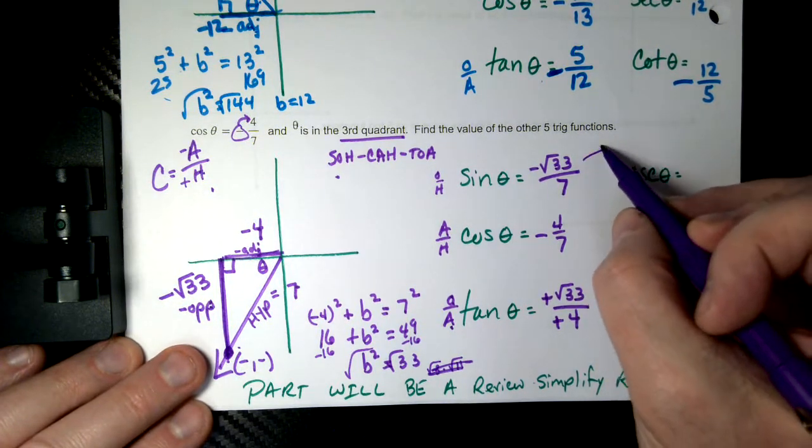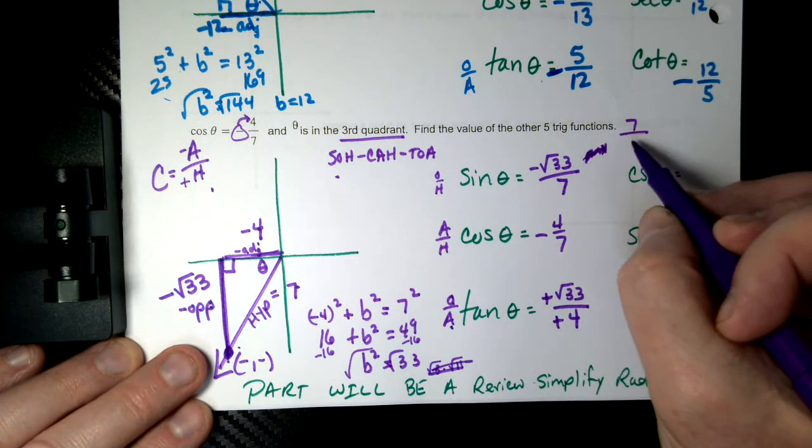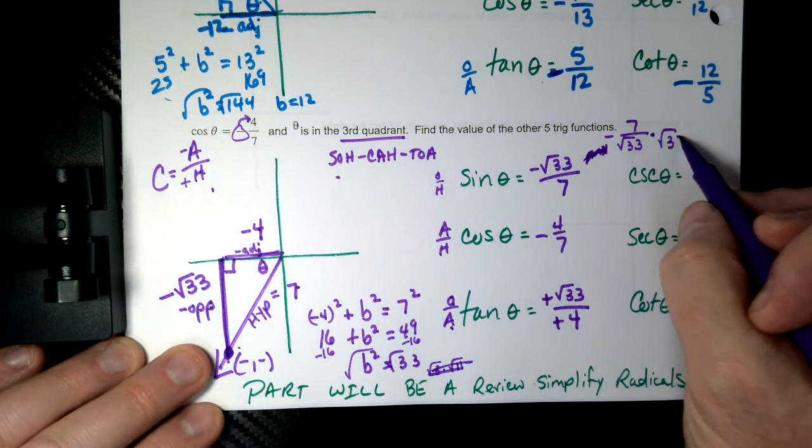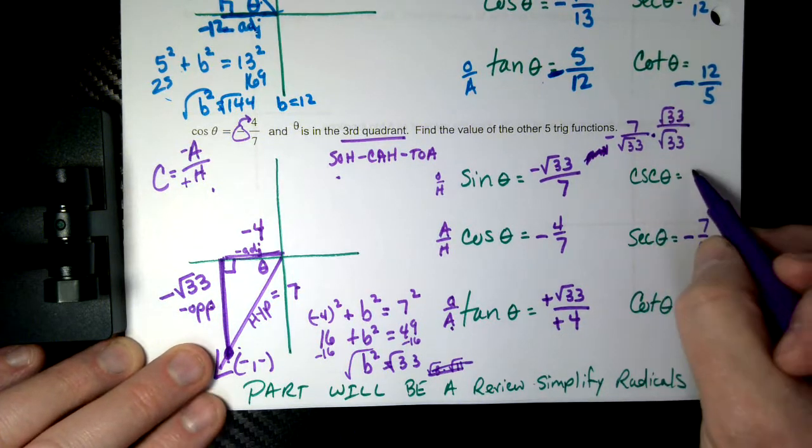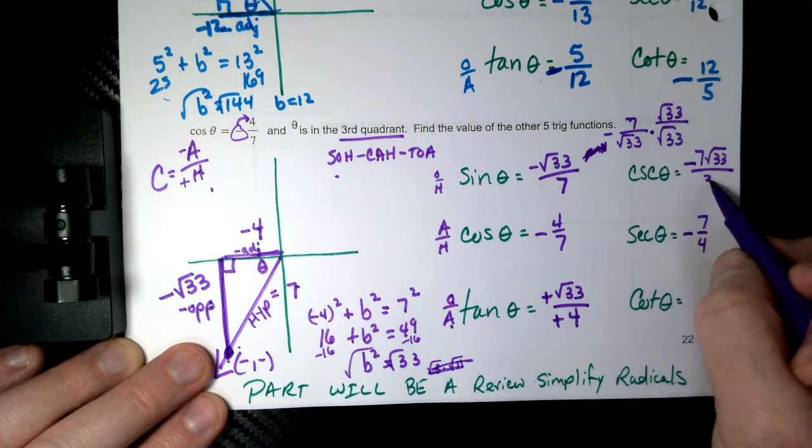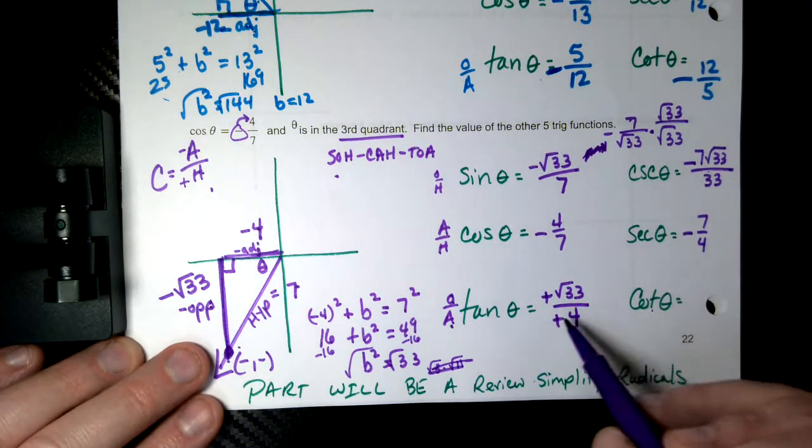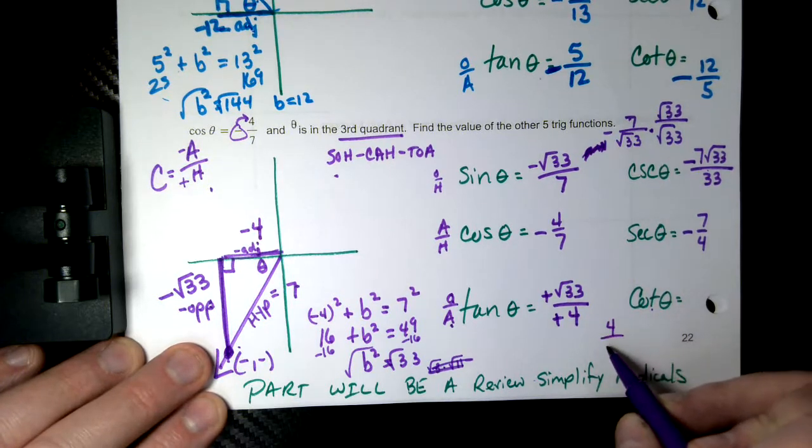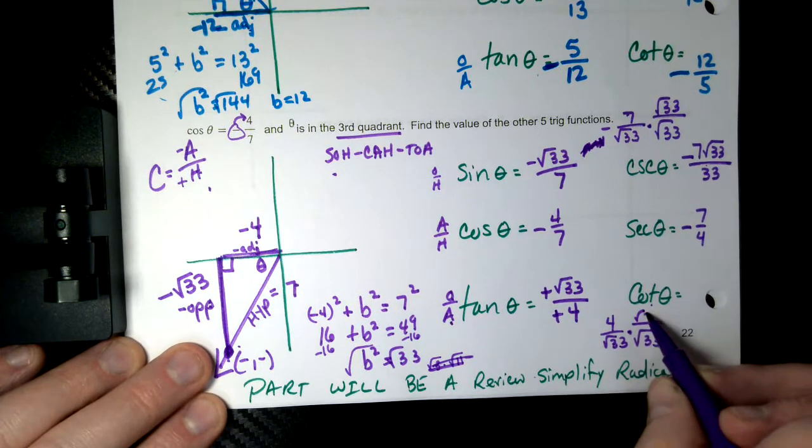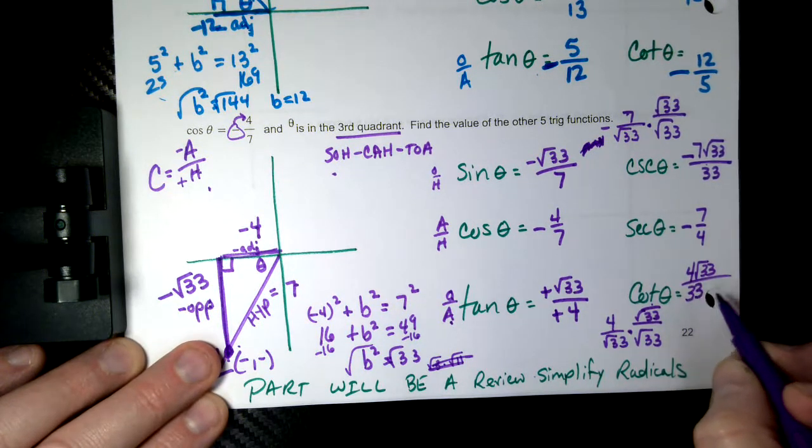For cosecant and cotangent, you got to be careful because when I do the reciprocal, you can't leave a square root on the bottom. So we're doing this on the test. Square root of 33. Square root of 33. On the top, you get negative 7. Square root 33 over regular 33. And when I do that for cotangent, 4 over root 33. Multiply root 33 top and bottom. 4 root 33 over 33.